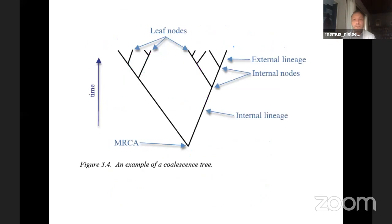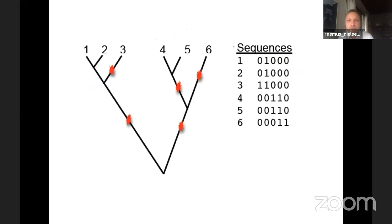Some terminology for trees: the tips are called leaf nodes; the lines connecting nodes are called edges or lineages; external lineages lead to leaf nodes, internal lineages do not; internal nodes are non-leaf nodes; and the most recent common ancestor of all sequences (the MRCA) is at the root of the tree.